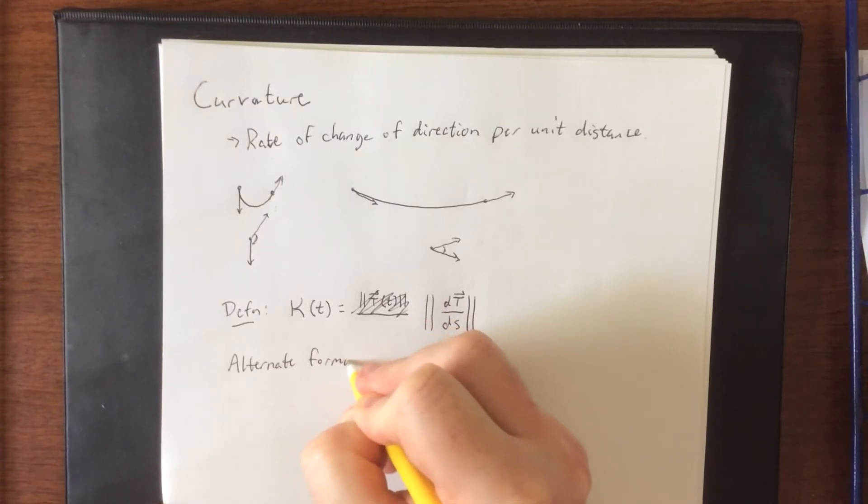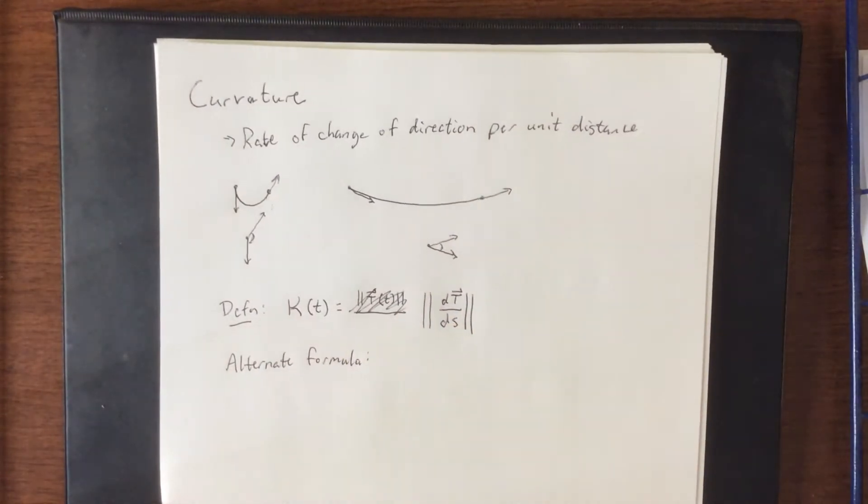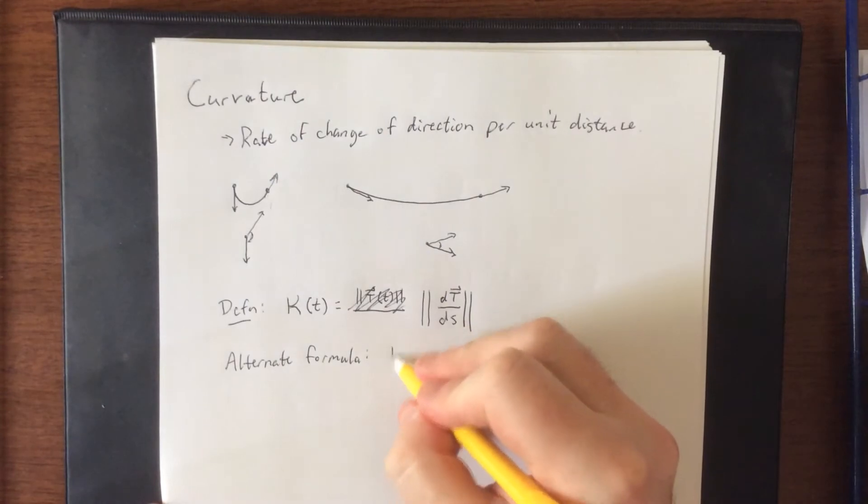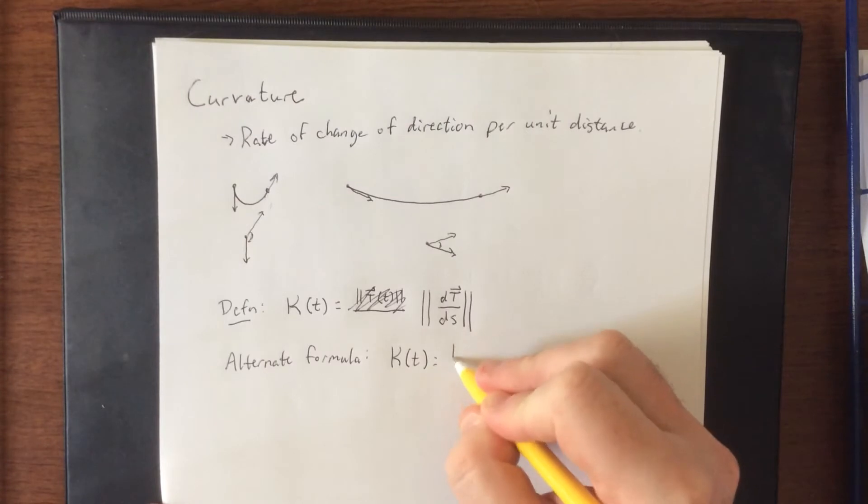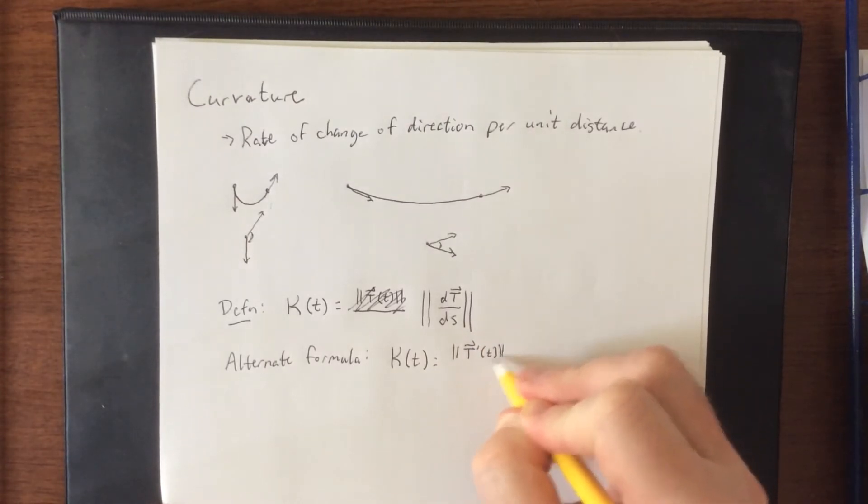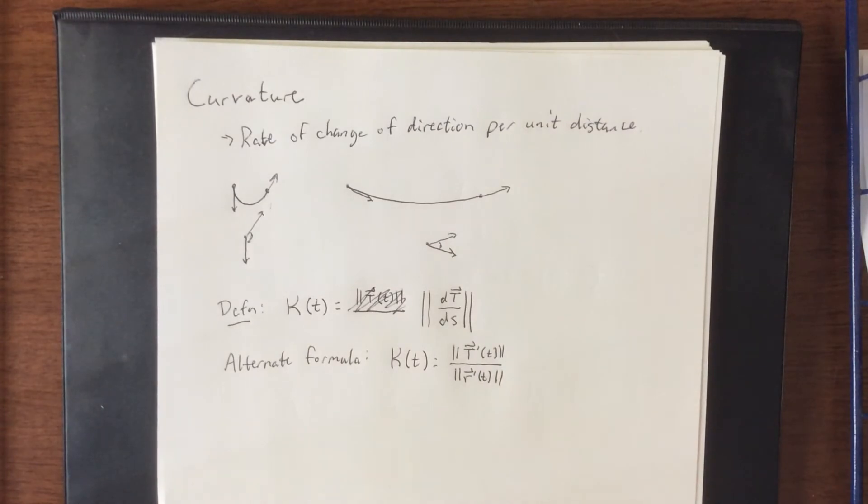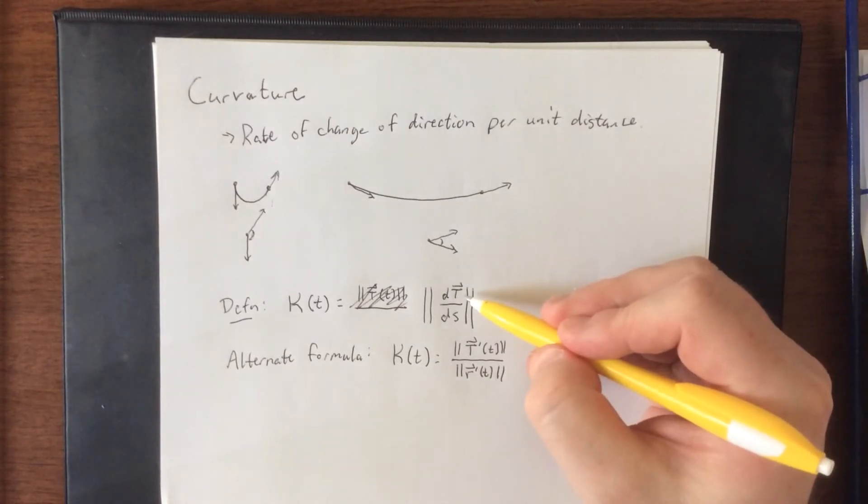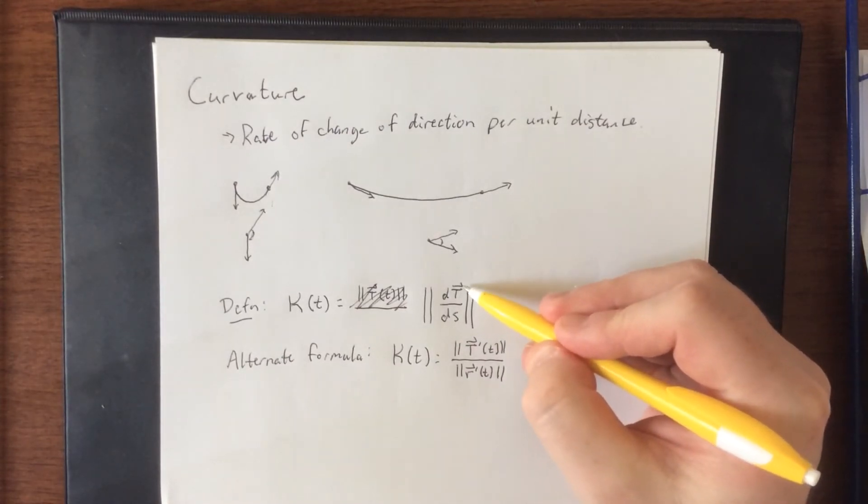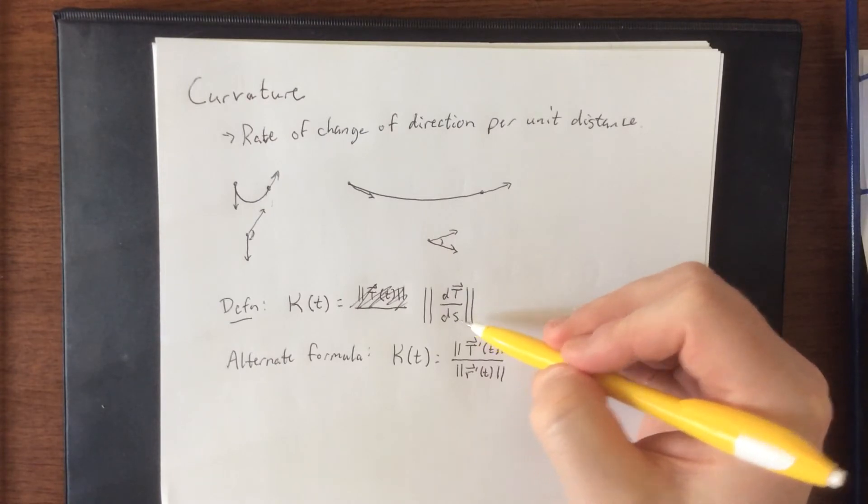The alternate formula that we're going to come up with is the following: kappa of t can also be expressed as the derivative of the unit tangent vector with respect to time divided by r prime of t. The way that this works is through the use of the chain rule.